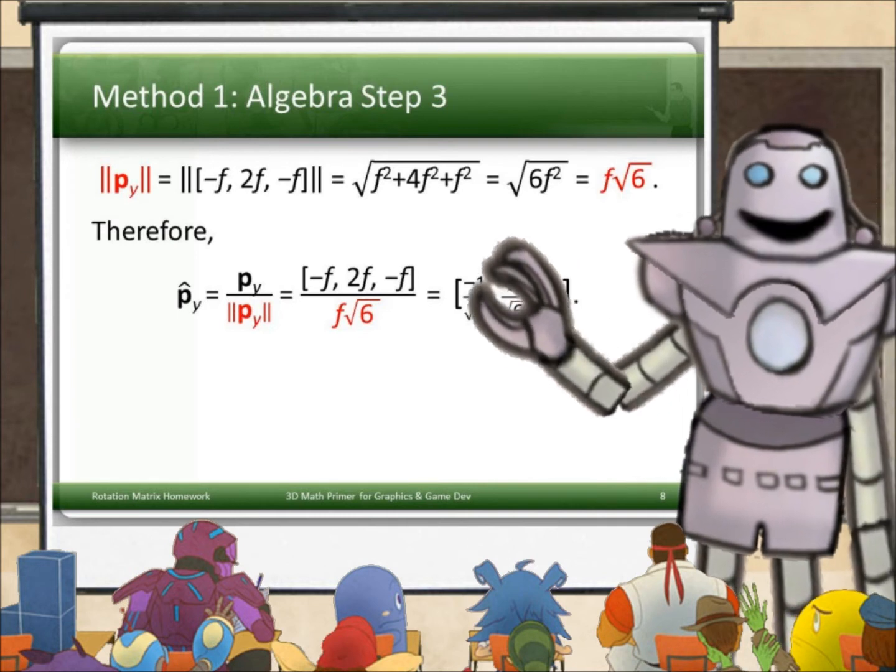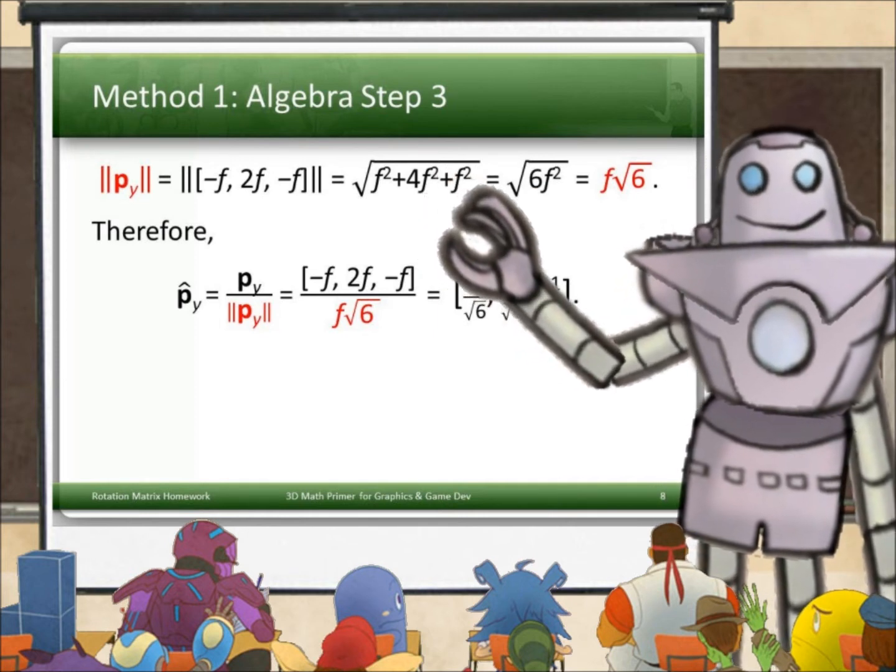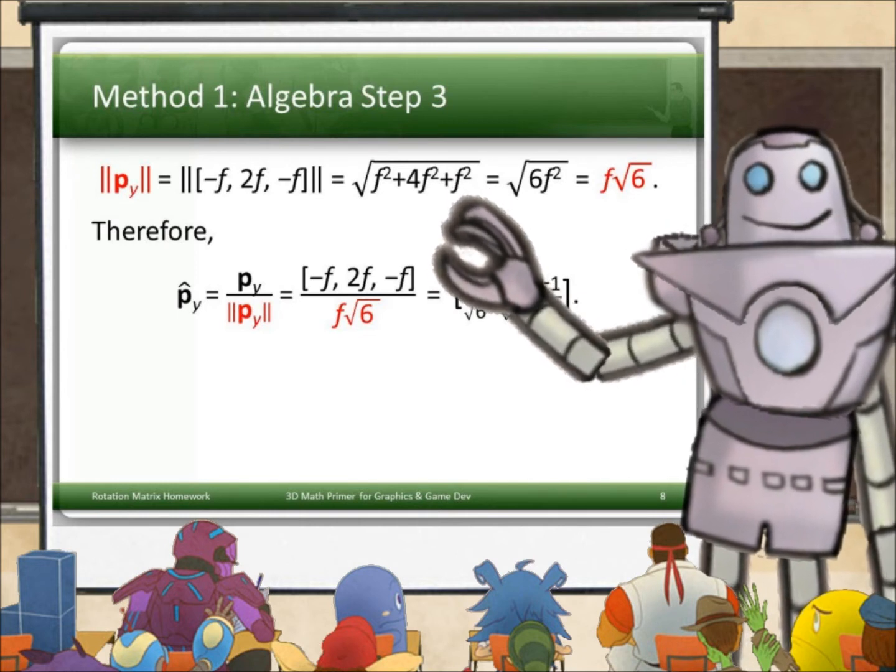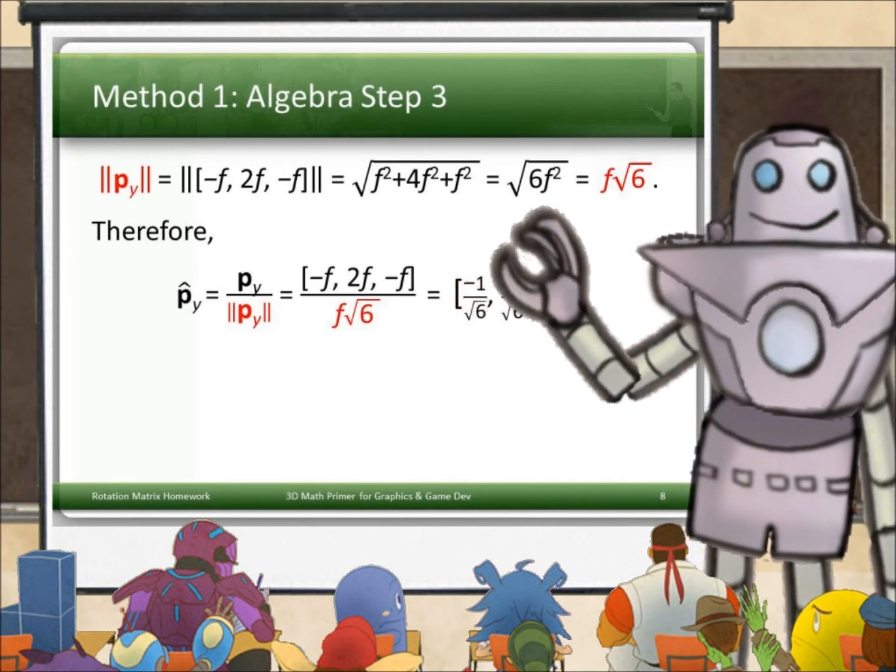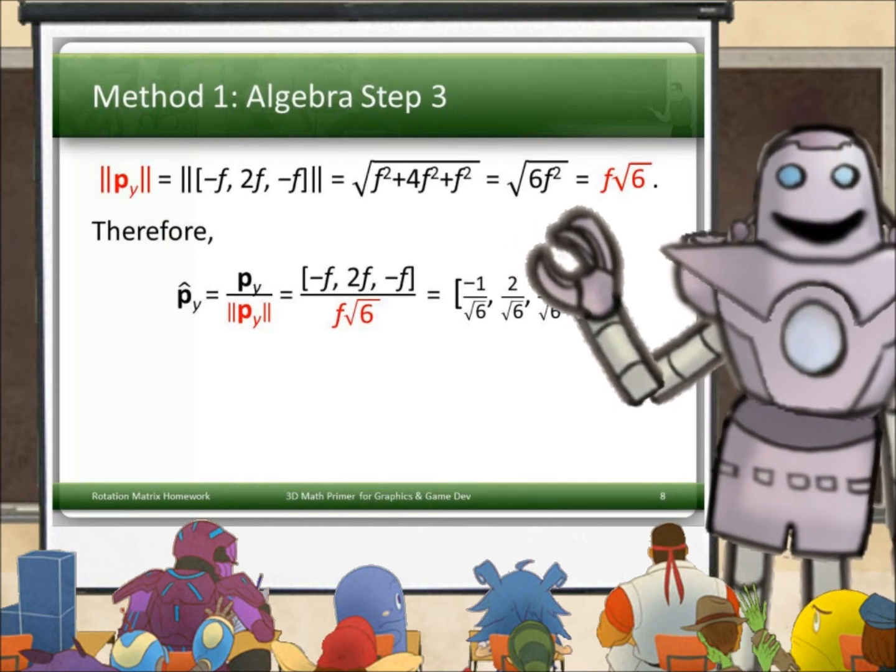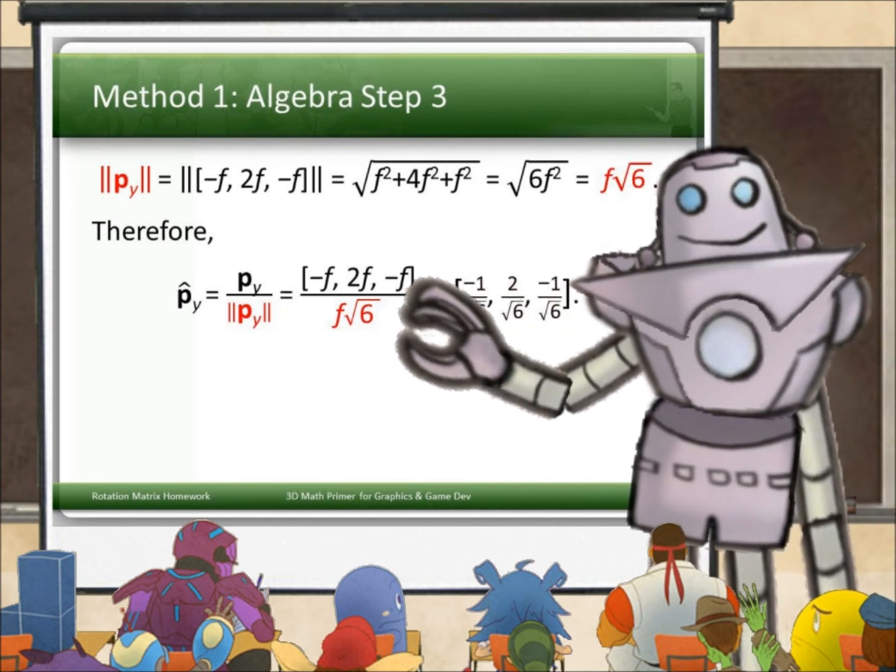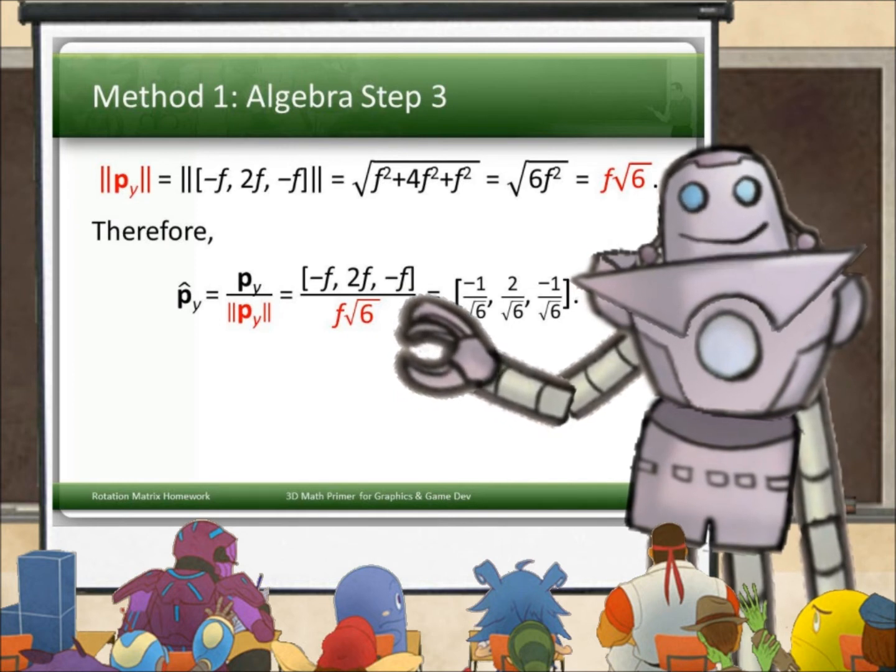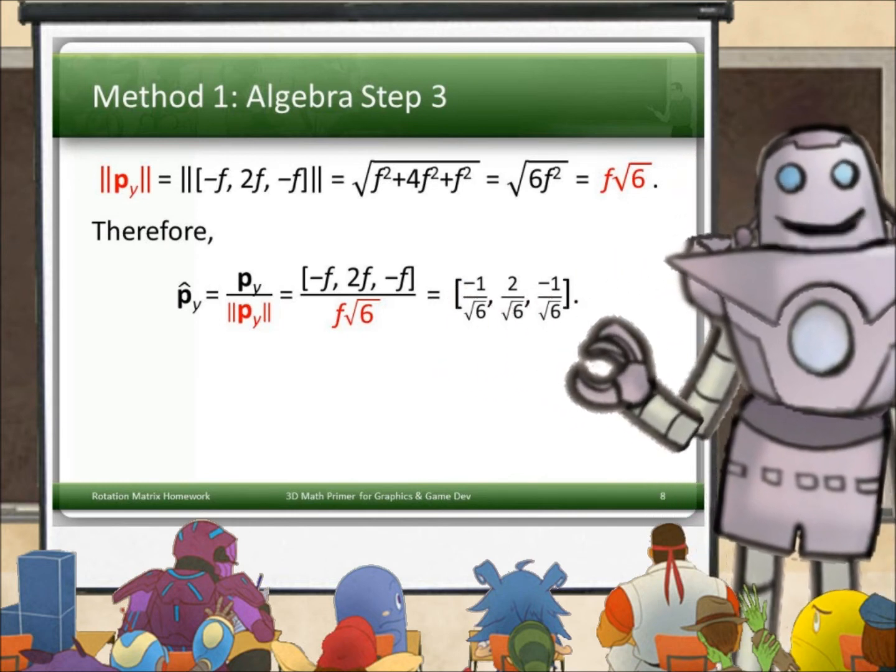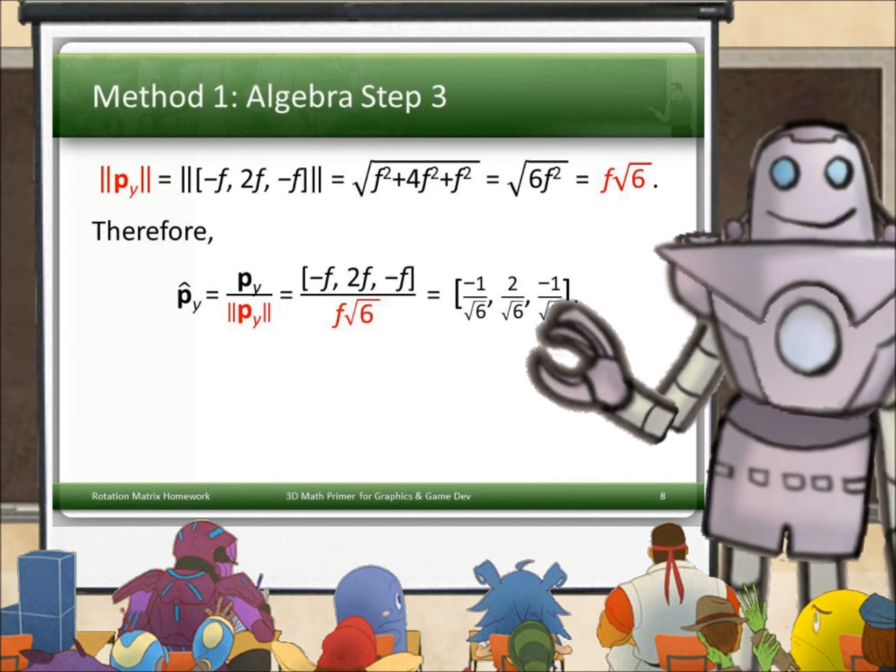Now we need to normalize p_y. So we need to divide p_y by its norm, by its magnitude. The magnitude of p_y up top here is magnitude of (-f, 2f, -f), which is the square root of (-f)² which is f², plus (2f)² which is 4f², plus f², which is square root of 6f², which is the square root of 6 times the square root of f². Square root of f² is f. So f√6. Therefore, p_y hat, the normalized version of p_y, is p_y divided by f times the square root of 6. So the f's cancel out, and I'm left with (-1/√6, 2/√6, -1/√6). Isn't that cool? So I'm done if I use algebra. That is p_y hat, and I can use that to make the rotation matrix. But what if you're the kind of person who prefers to see things geometrically?